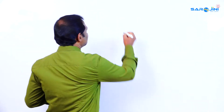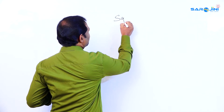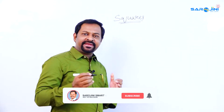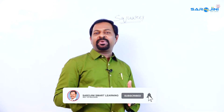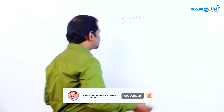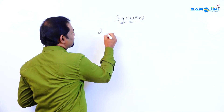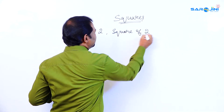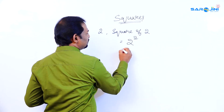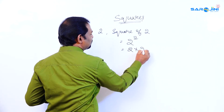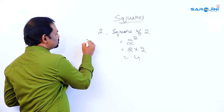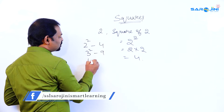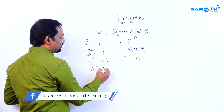So first of all I'm going to start with squares. Any number which when multiplied by itself is a square. For example, the square of 2 is 2 to the power of 2, that is 2 into 2, which equals 4. So 2 square is 4, 3 square is 9, 4 square is 16, 5 square is 25.